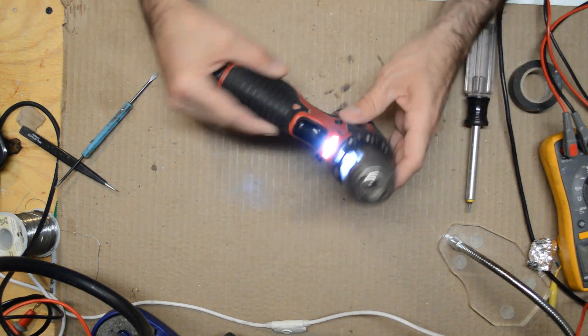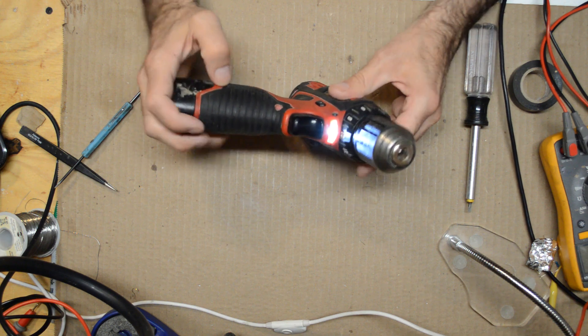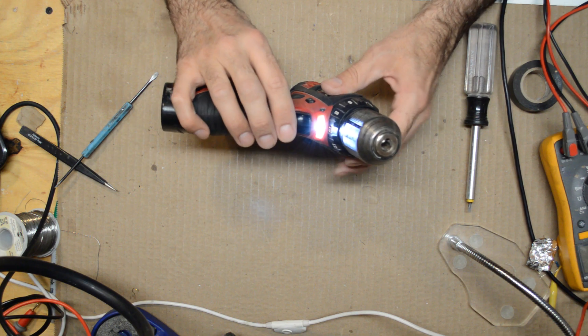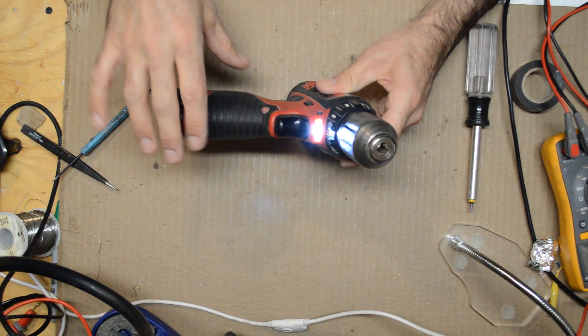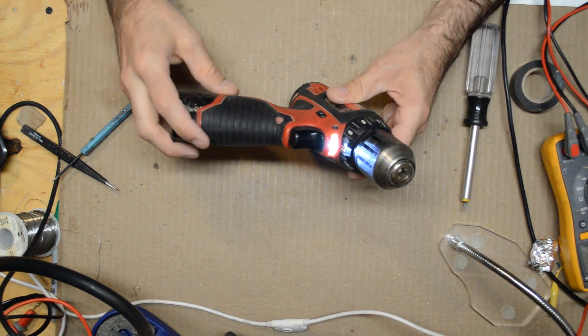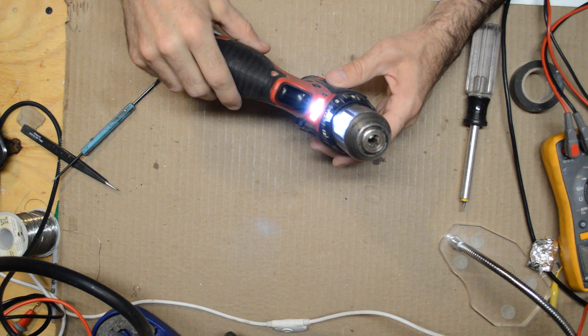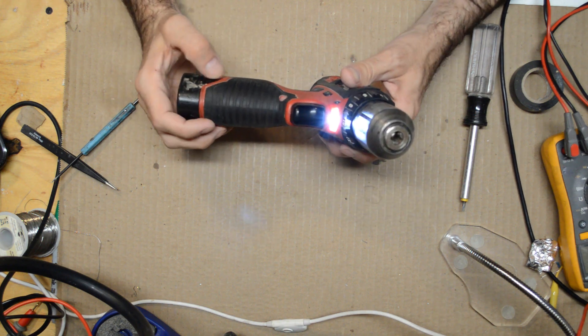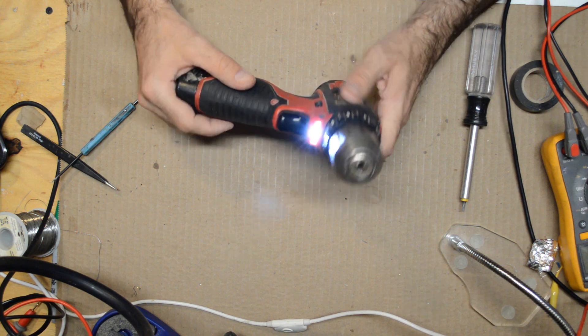The problem with it is, and it's been doing this for about a year, the light won't go out. Sometimes it does, sometimes I can just hit it a few times and it'll go out, but it's really annoying. It'll sit in my toolbox and just drain the battery.